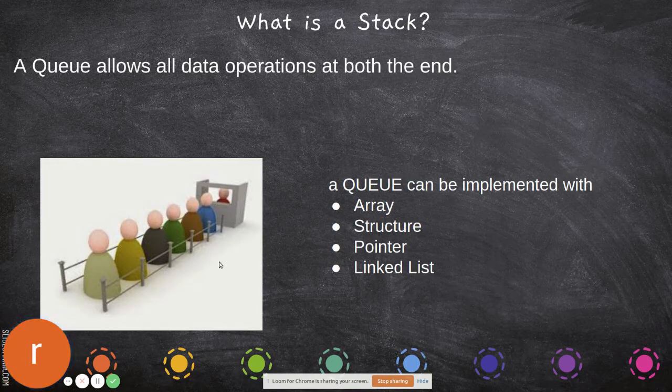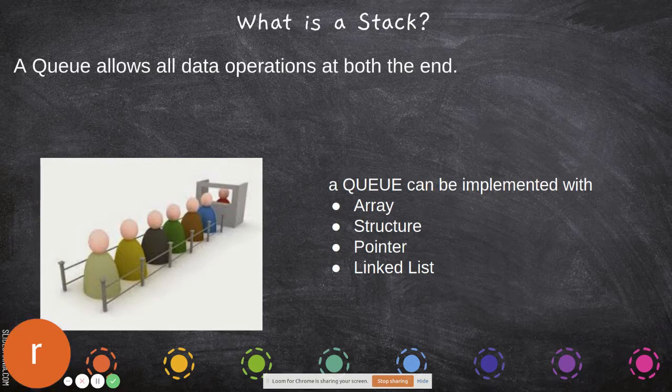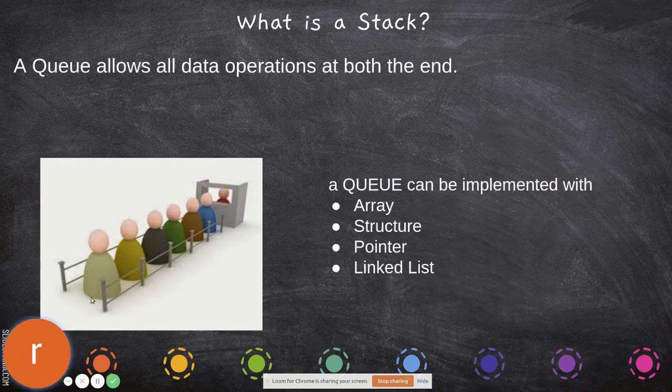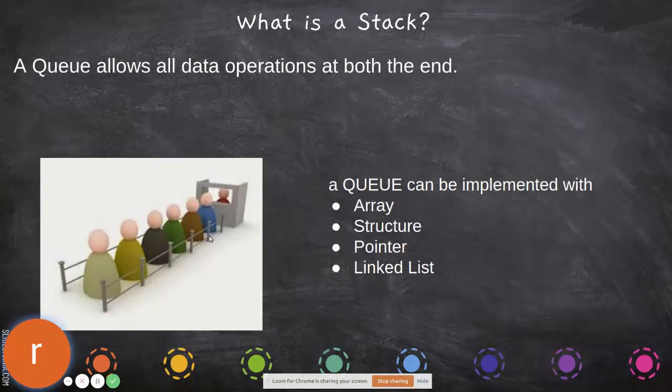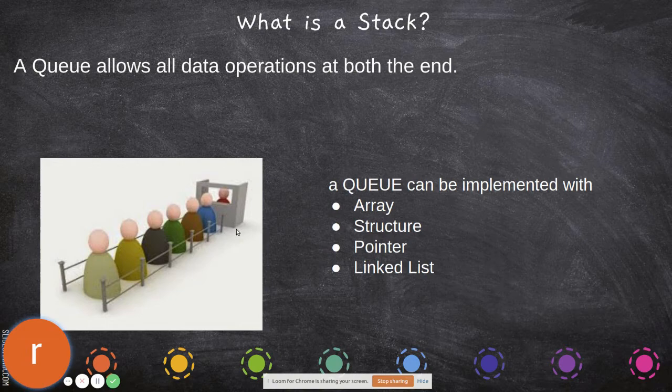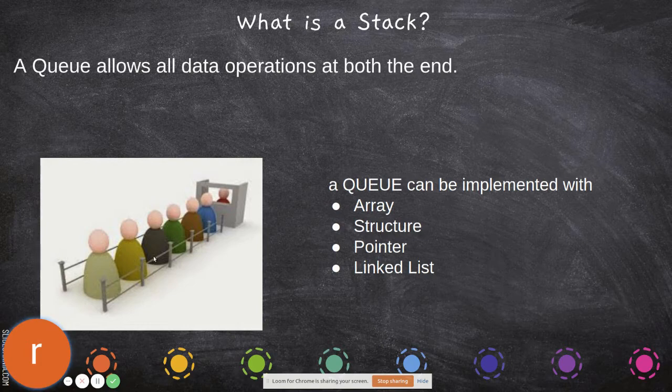to implement in our data structure. The removal is done from the front - after an element is served, it will be removed. Addition into the queue is done at the end. Unlike stack, here there are two pointers: front and rear. Through front you remove data, through rear you keep adding data. At any point, you have to verify